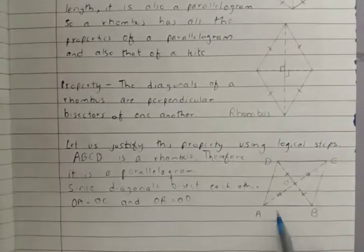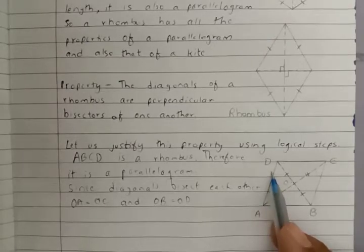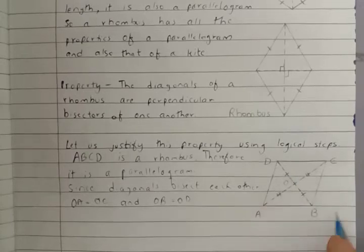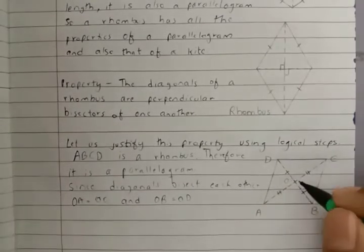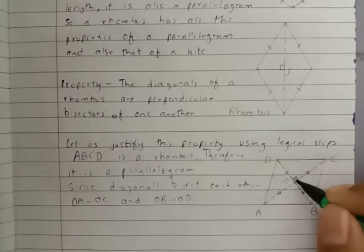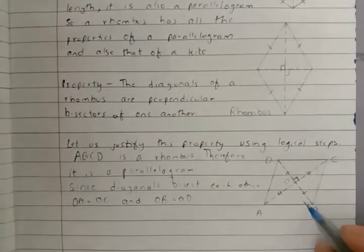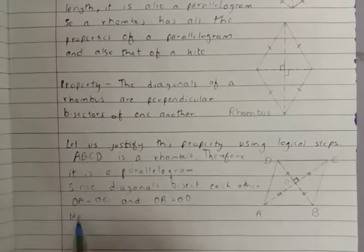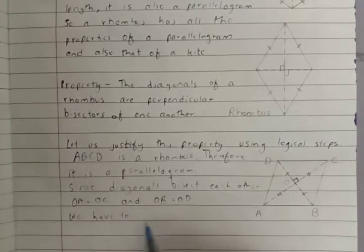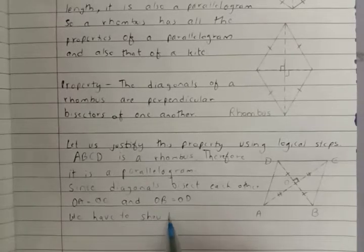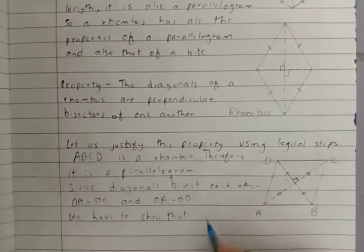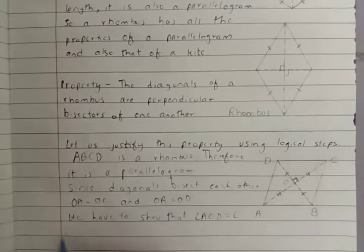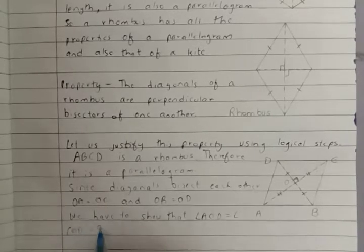Now we have to show that angle AOD is equal to angle COD, and both are equal to 90 degrees. We have to show that these two angles are 90 degrees. We will write it down: we have to show that angle AOD equals angle COD equals 90 degrees.